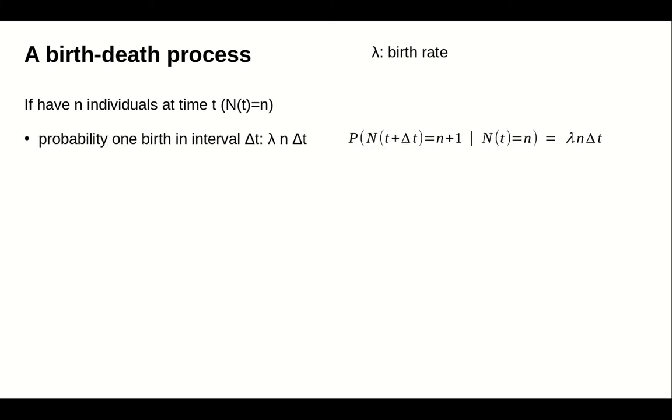Let's say at the beginning of the interval, capital N(t) equals lowercase n, where lowercase n is some positive integer. If the birth rate is lambda, then we multiply delta t by lambda times the population size n to get the probability of a birth in that interval. This is the probability that, starting with n individuals at time t, the number of individuals increases due to a birth to n+1 by the end of the interval, i.e. at time t plus delta t.